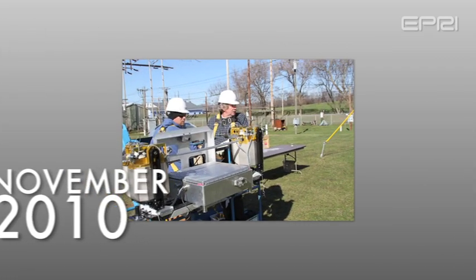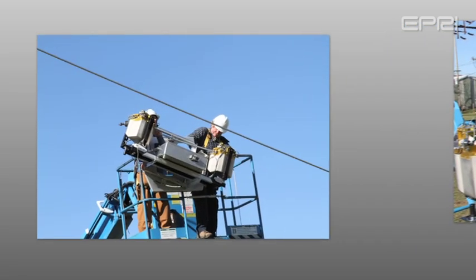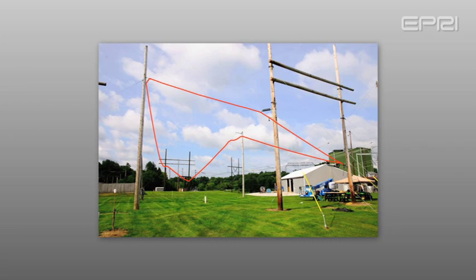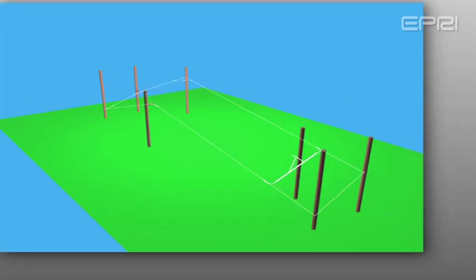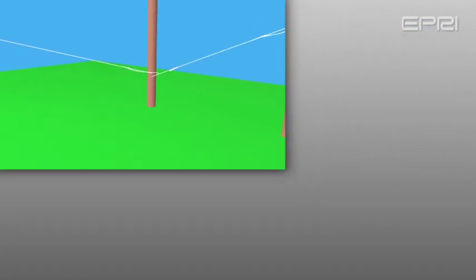In the autumn of 2010, a revised technology demonstrator was tested at EPRI's laboratory in Lenox, Massachusetts. A test line simulating all the worst-case scenarios the robot will encounter when autonomously traversing the shield wire of a 765 kV transmission line was built.